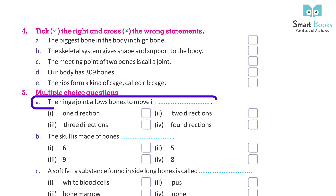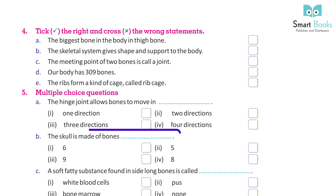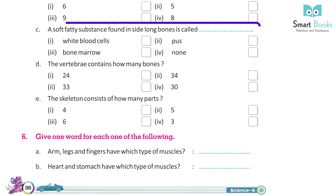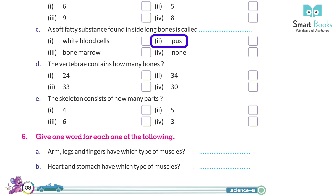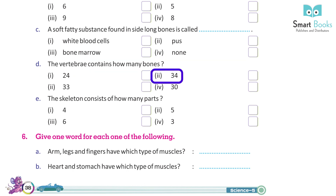Multiple choice questions: A. The hinge joint allows bones to move in — 1. 1 direction, 2. 2 directions, 3. 3 directions, 4. 4 directions. B. The skull is made up of — 1. 6, 2. 5, 3. 9, 4. 8 bones. C. A soft fatty substance found inside long bones is called — 1. White blood cells, 2. Pus, 3. Bone marrow. D. The vertebral column contains how many bones — 1. 24, 2. 34, 3. 33, 4. 30. E. The skeleton consists of how many parts — 1. 4, 2. 5, 3. 6, 4. 3.